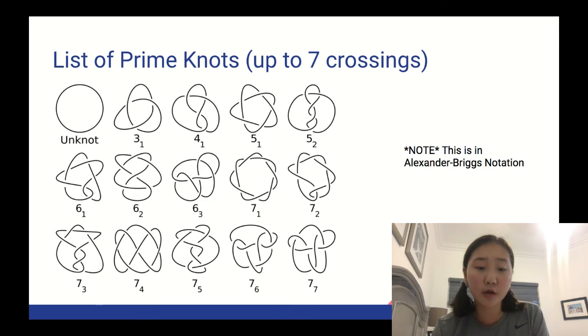Some of the most well-known knots are shown here. The unknot, which is just the loop. The trefoil, which is labeled as 3 subscript 1. The figure 8, which is labeled as 4 subscript 1. And the Solomon's seal, which is labeled as 5 subscript 1.